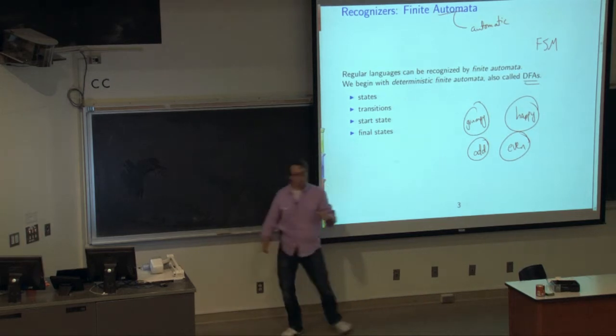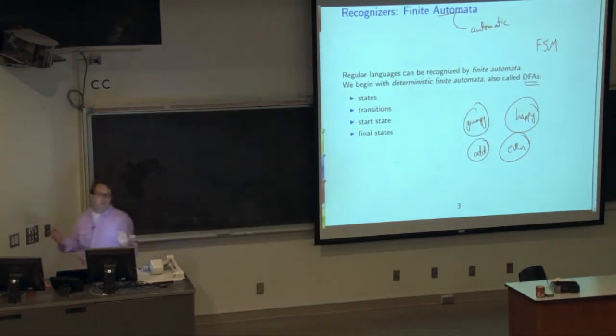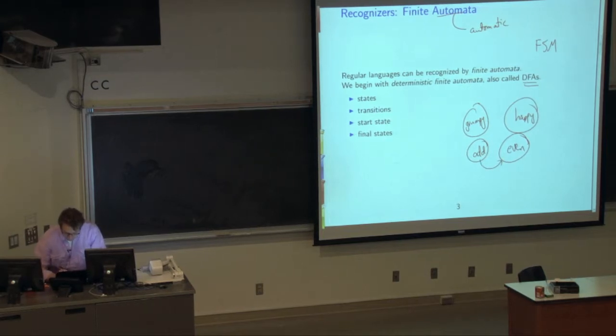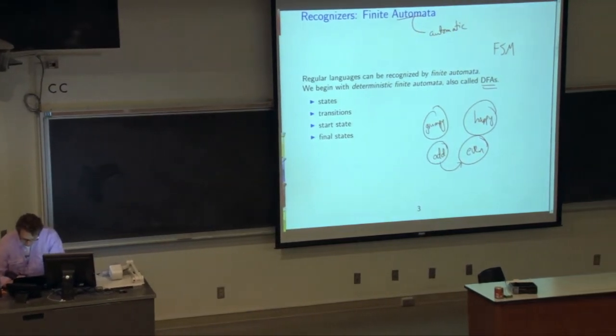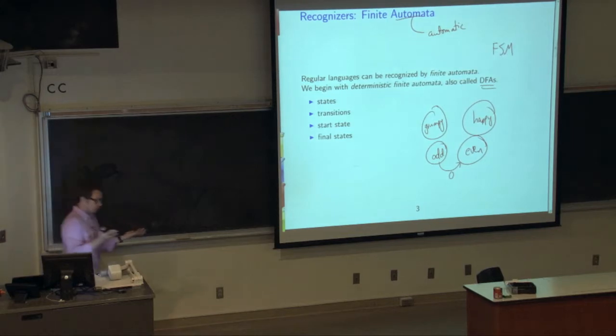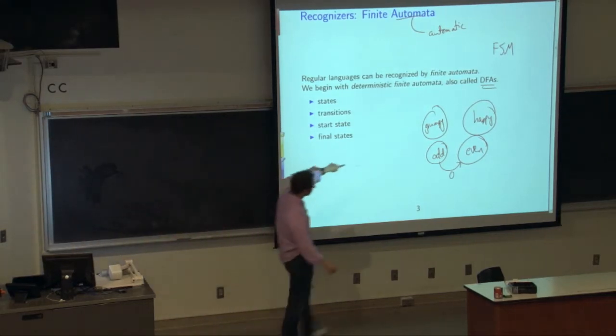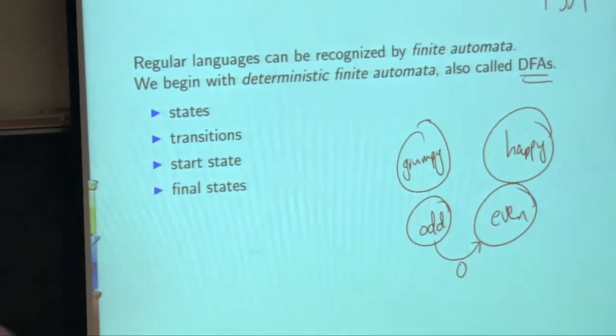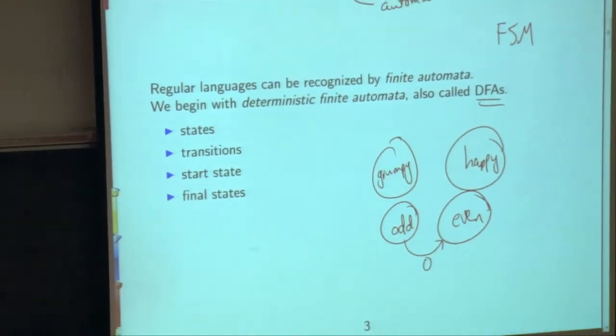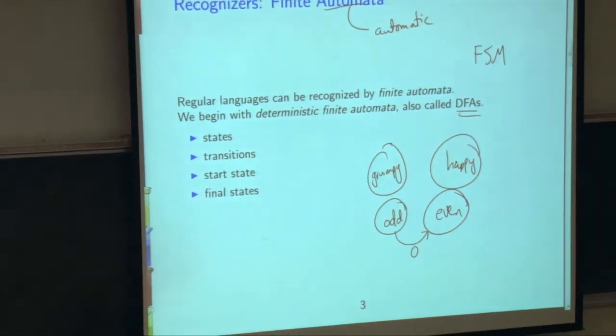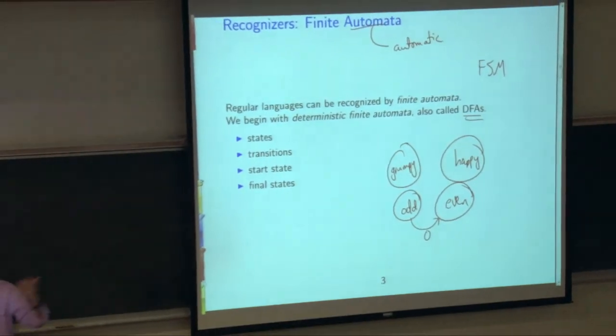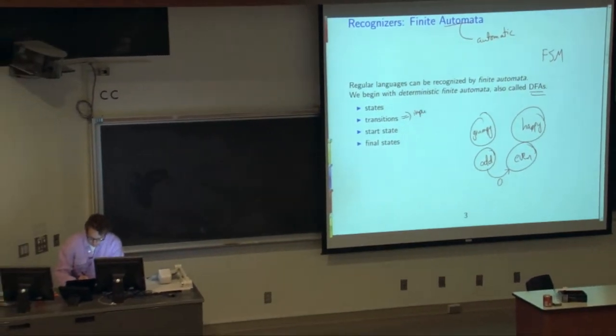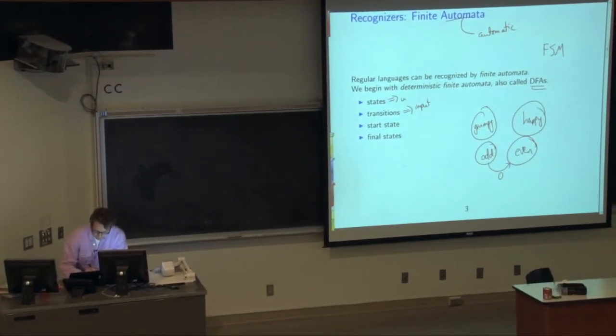And then we have transitions. A transition takes me from one state to another state. So perhaps I move from odd to even by reading, for example, zero. For some reason. In other words, this transition, this arrow from one state to another with a direction on it, implies that I can move from the state odd to the state even when I have some input zero. So transitions deal with input. And a state is really where I am.